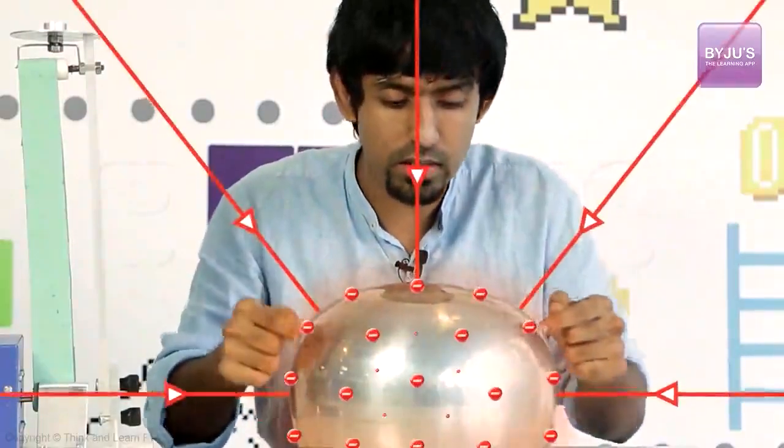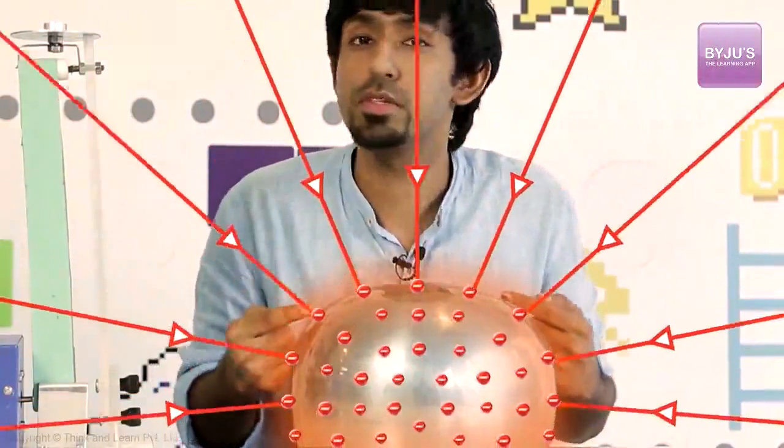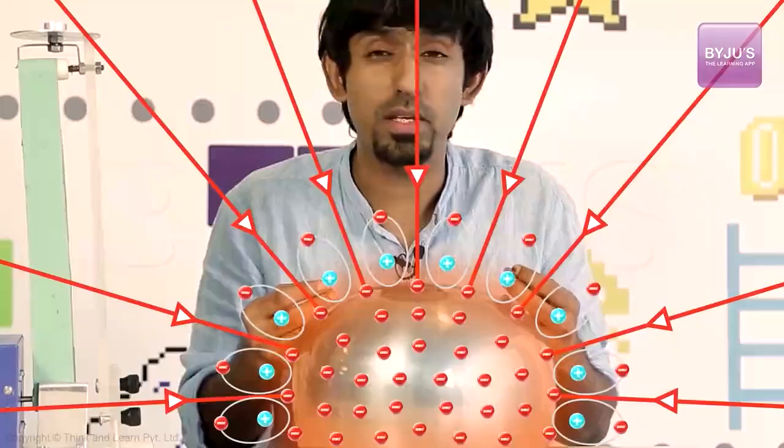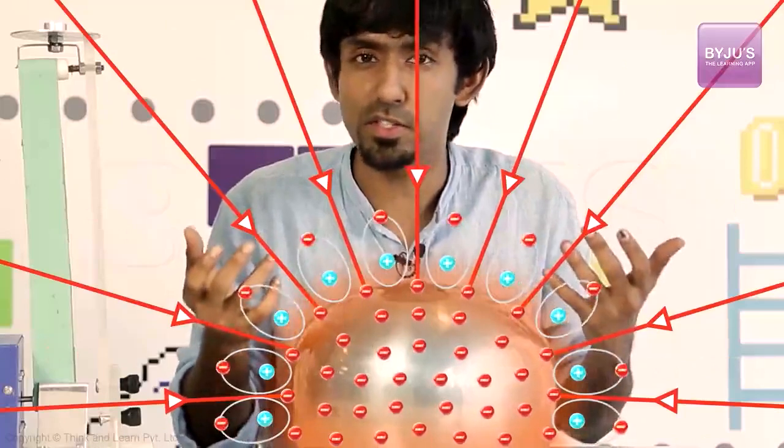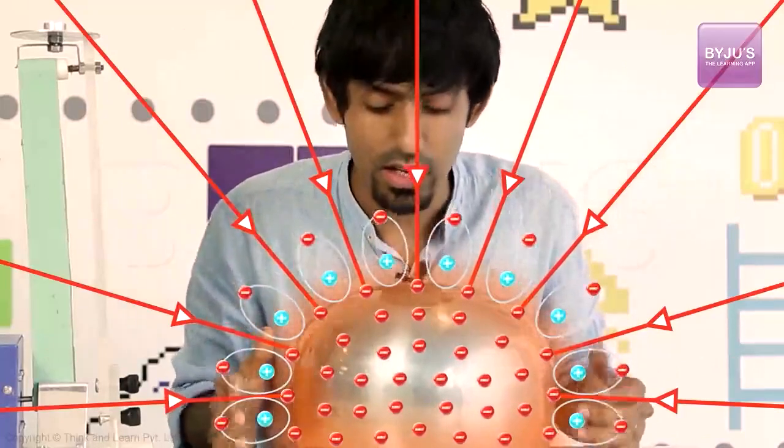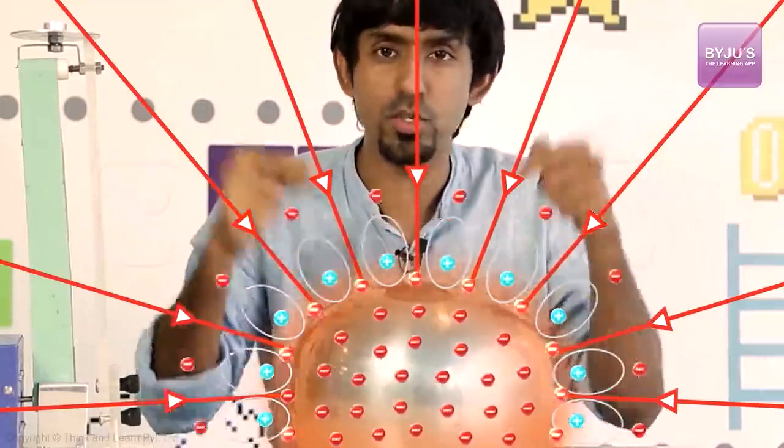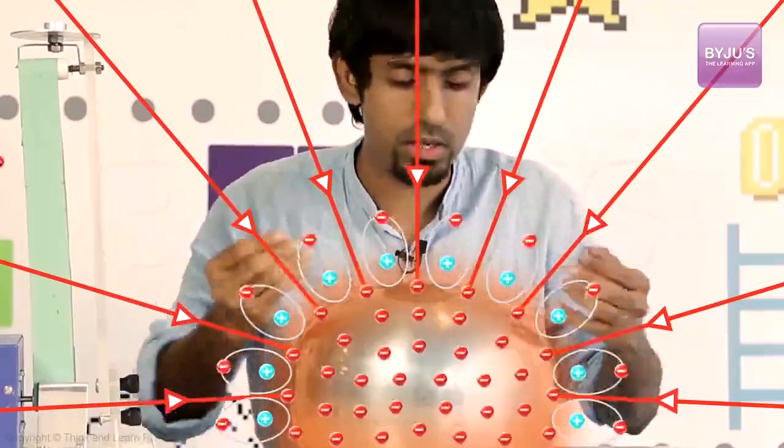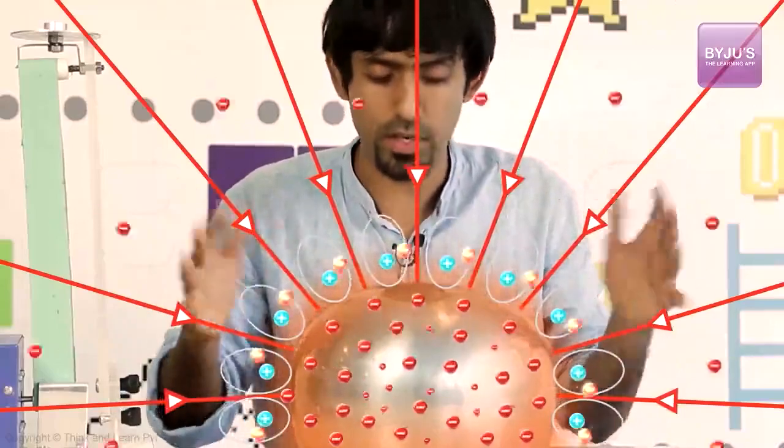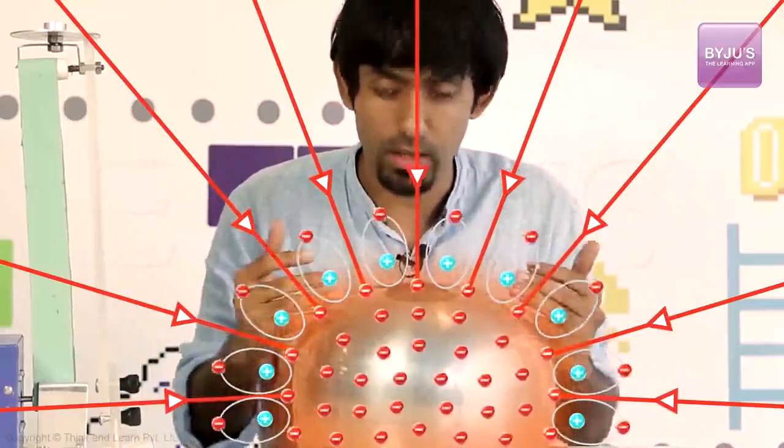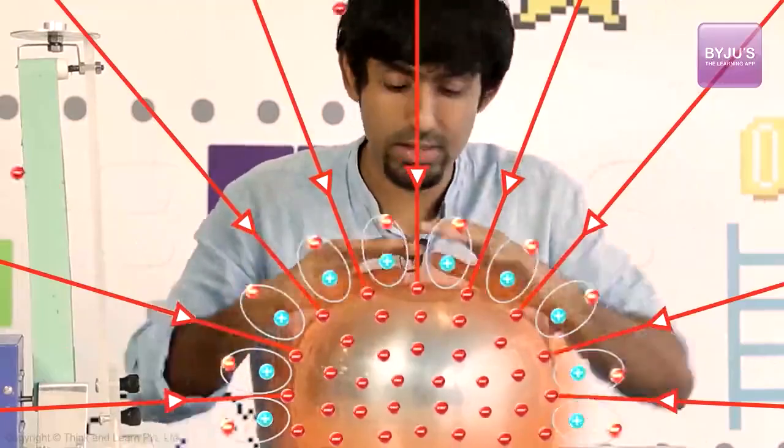So as I keep doing that, what can happen after a point is the electric field at the closest regions can become high enough and then charge can start spilling out effectively because the air around gets ionized. And when that happens, you reach a limit of how much charge you can put because any more you put, this keeps going into the atmosphere and the charge density of this metal remains a constant. After that, it's hit its limit.